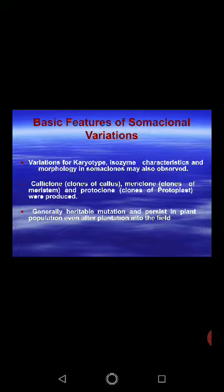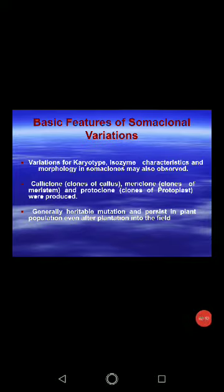There is a term called caliclone: clones produced from callus are called caliclones — this definition might be asked in an exam. Then there is mericlone: clones obtained from meristematic cells are known as mericlones. And protoclones are clones obtained from the protoplast.